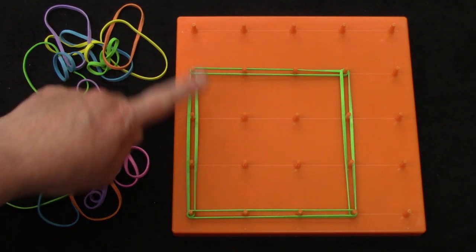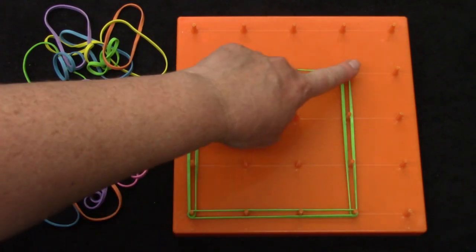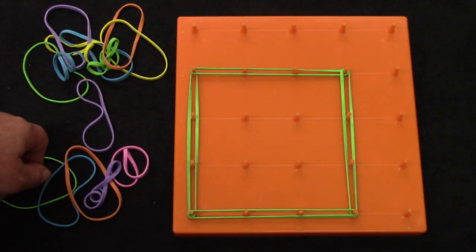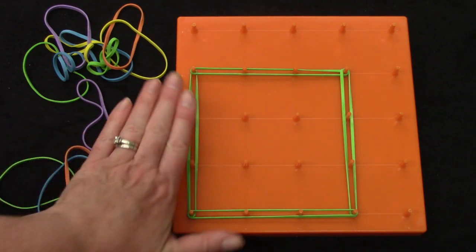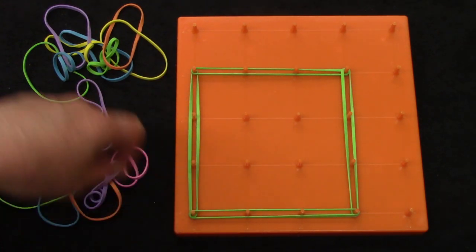And how many angles does a square have? You're right. Just like the square has four sides, it also has four angles.